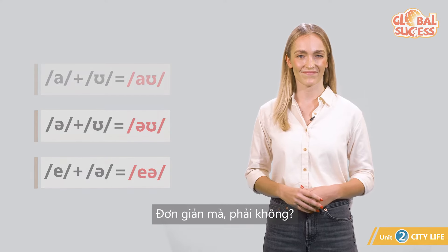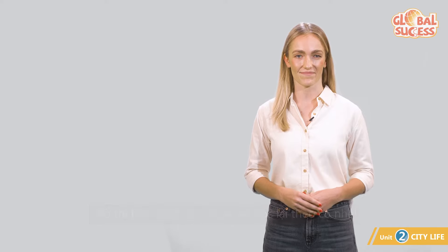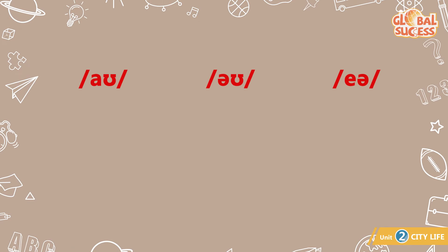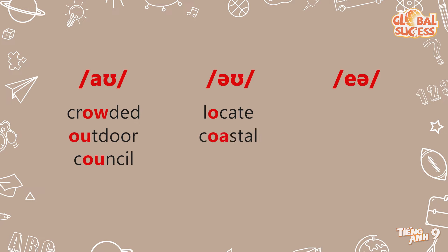Easy, right? Now, listen to the words and repeat after me. /aʊ/: crowded. /aʊ/: outdoor. /aʊ/: council. /oʊ/: locate. /aʊ/: coastal. /aʊ/: overseas.